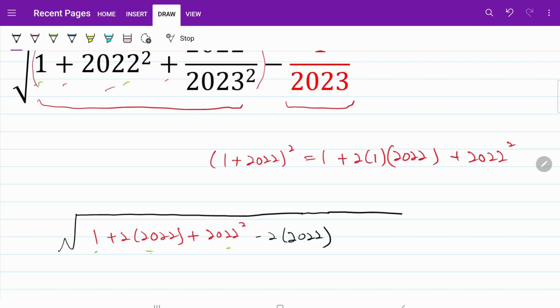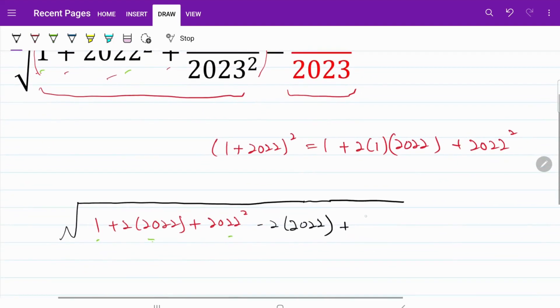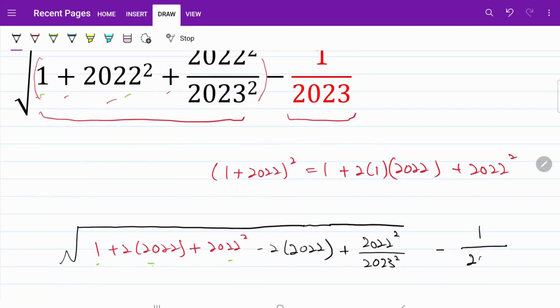From here, the remaining part of the expression remains the same, which is plus 2022 squared over 2023 squared. And let's not forget the fraction outside of the square root, which is 1 over 2023.